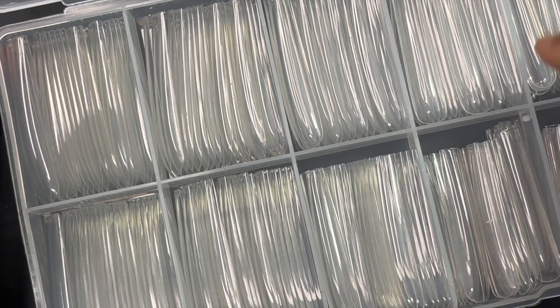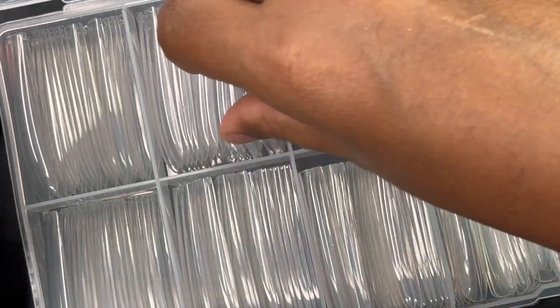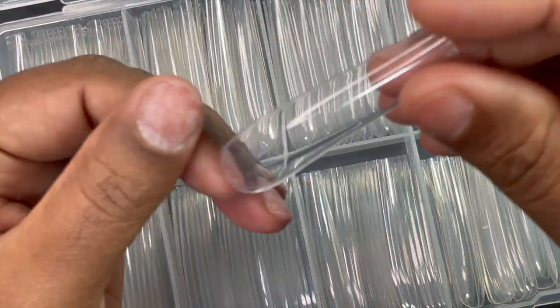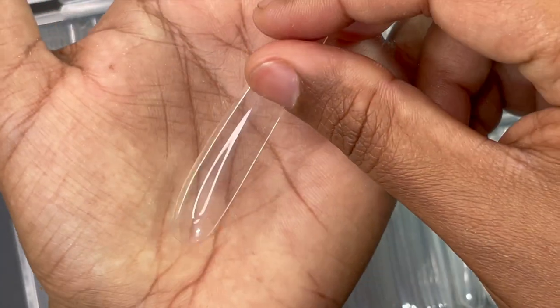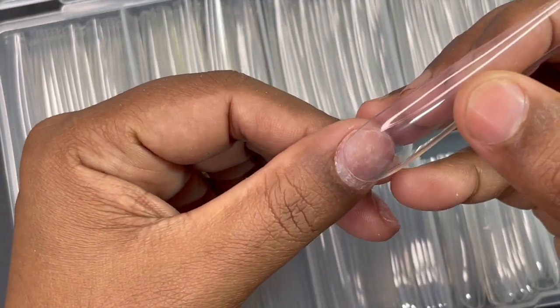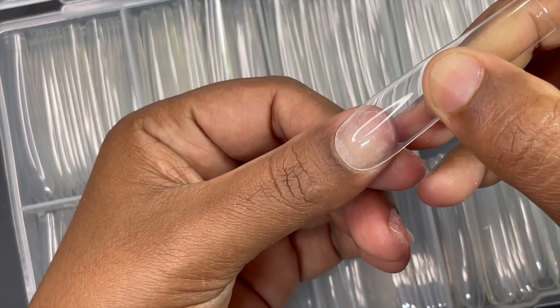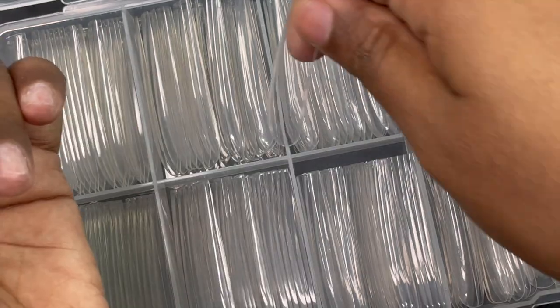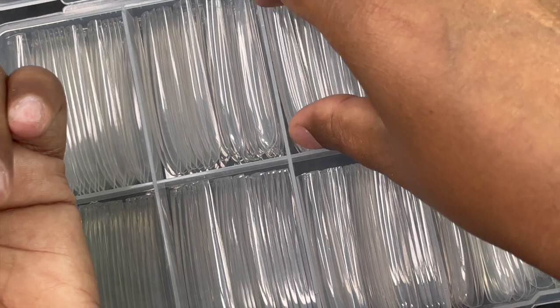So these are like press-on tips. I don't think this is soft gel but I used it as a soft gel because I was anyways not going to keep this for a longer time. These tips are really long and for aquarium nails, obviously we need longer nails. So I measured the right size of the tips for all my five nails and now we are going to start with the aquarium building.